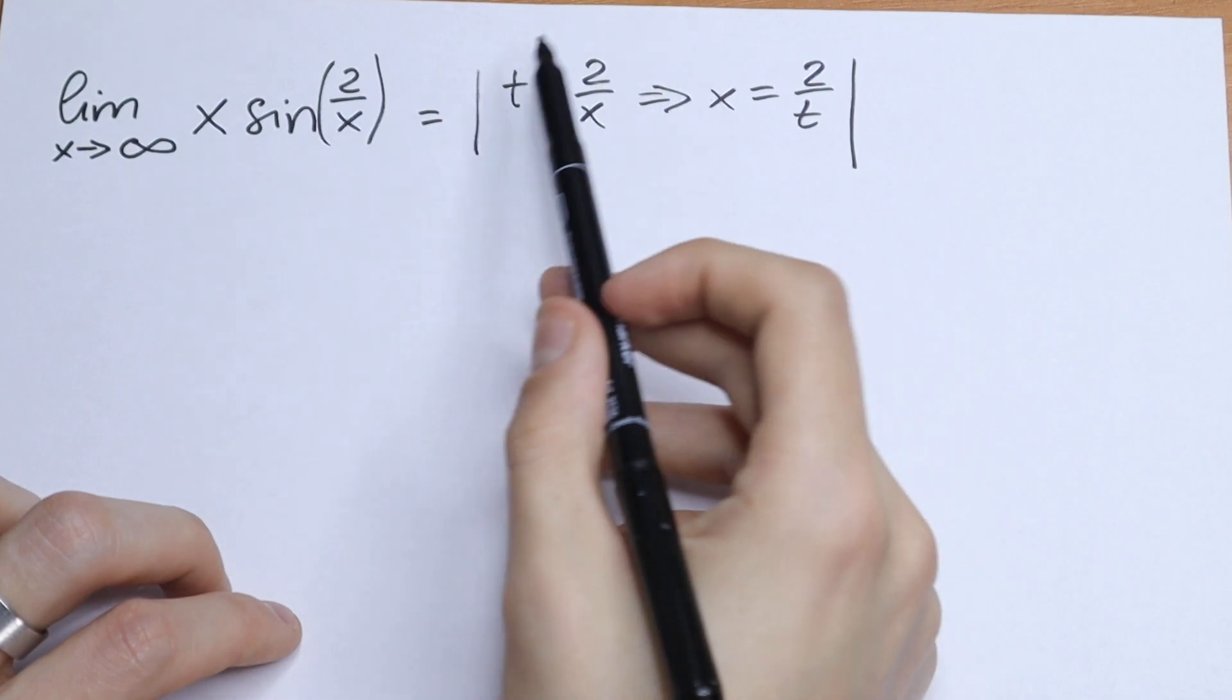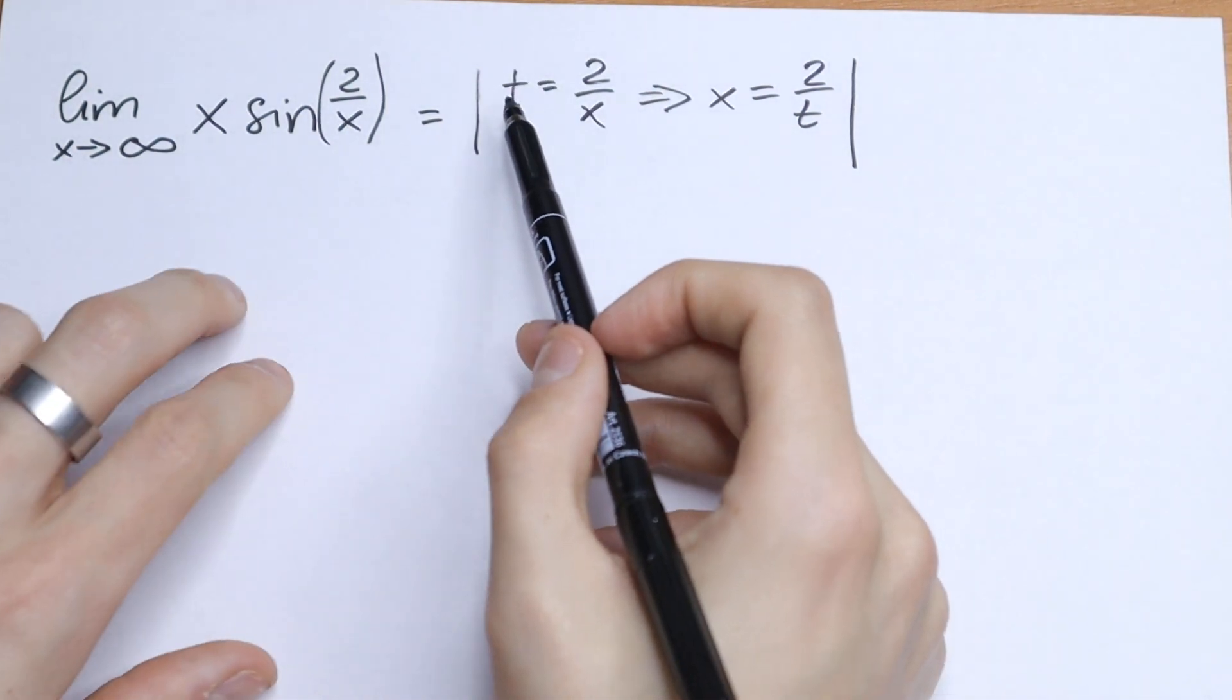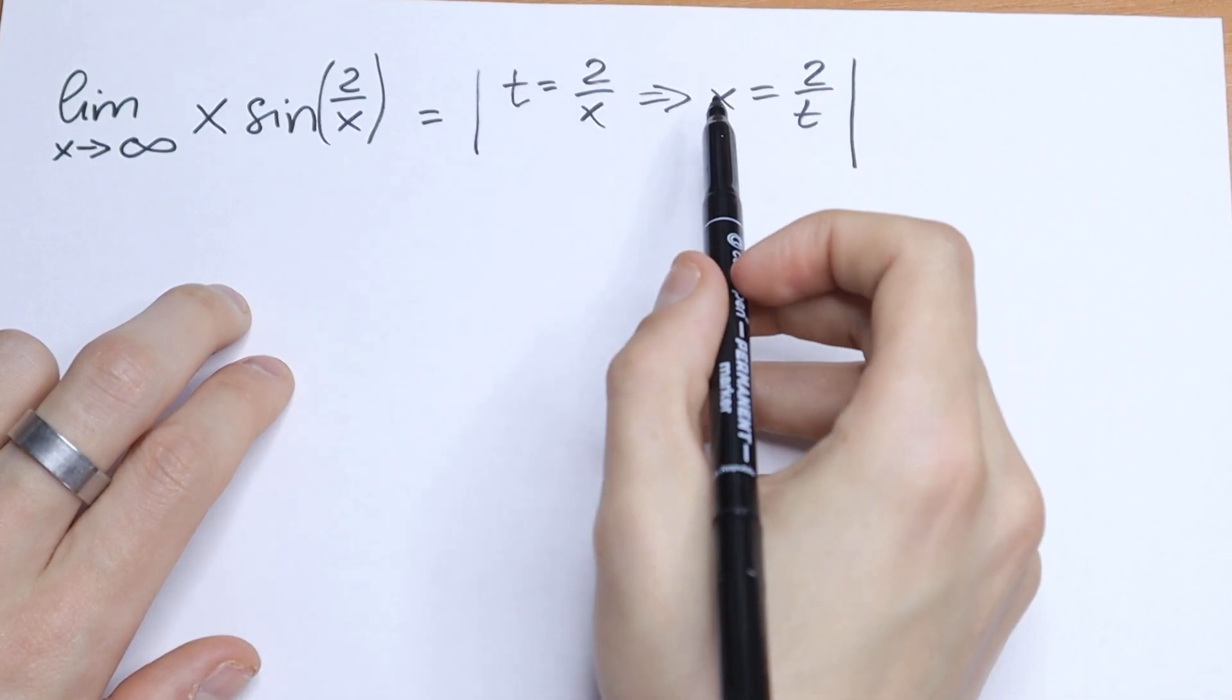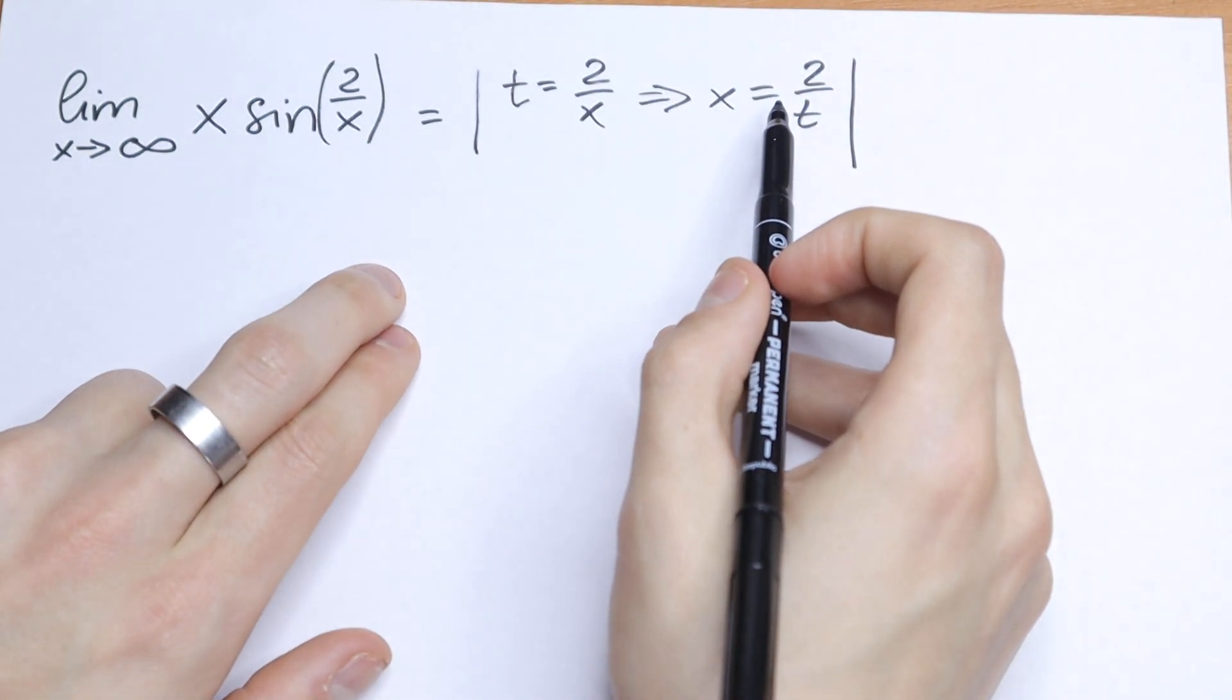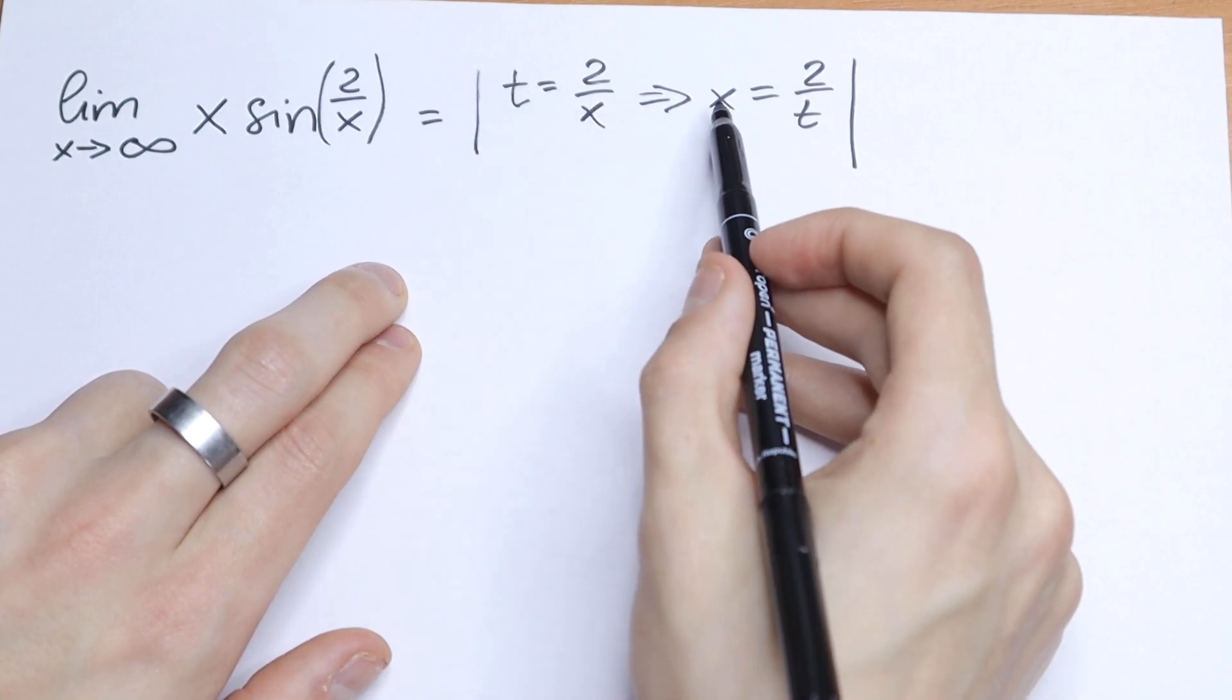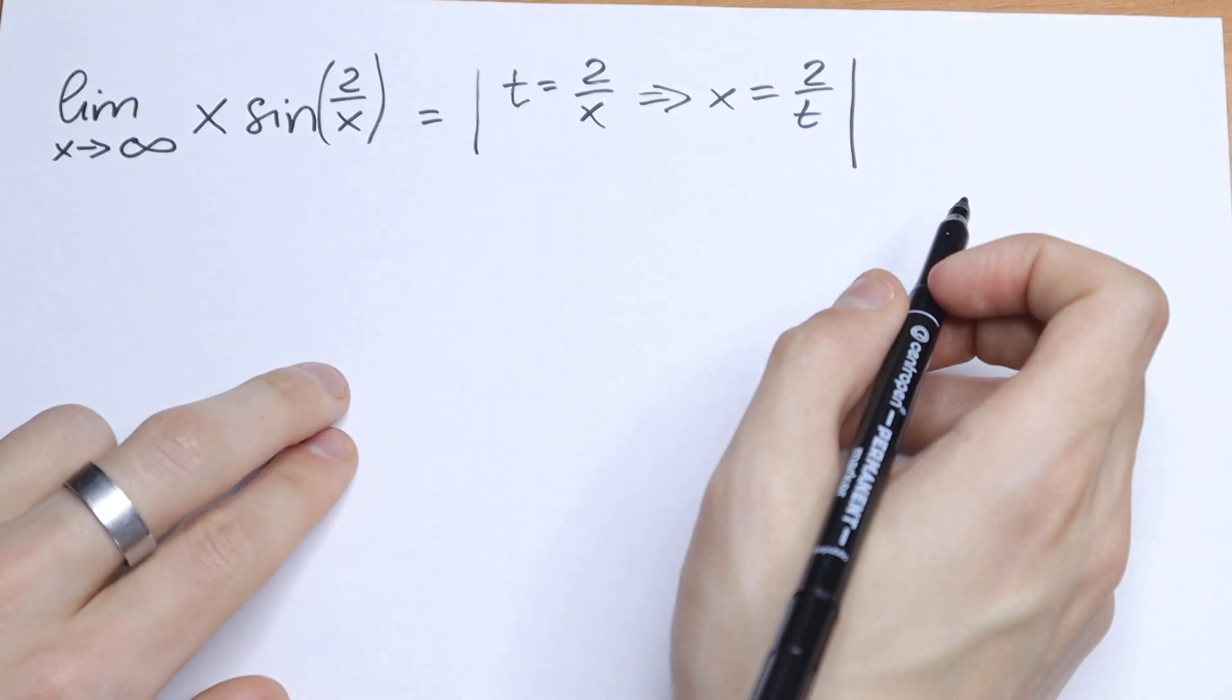So how can you solve this? I write right here a substitution. Let 2 over x equal to t. Then from here our x will be equal to 2 over t. So cross multiply and our x will be equal to 2 over t.